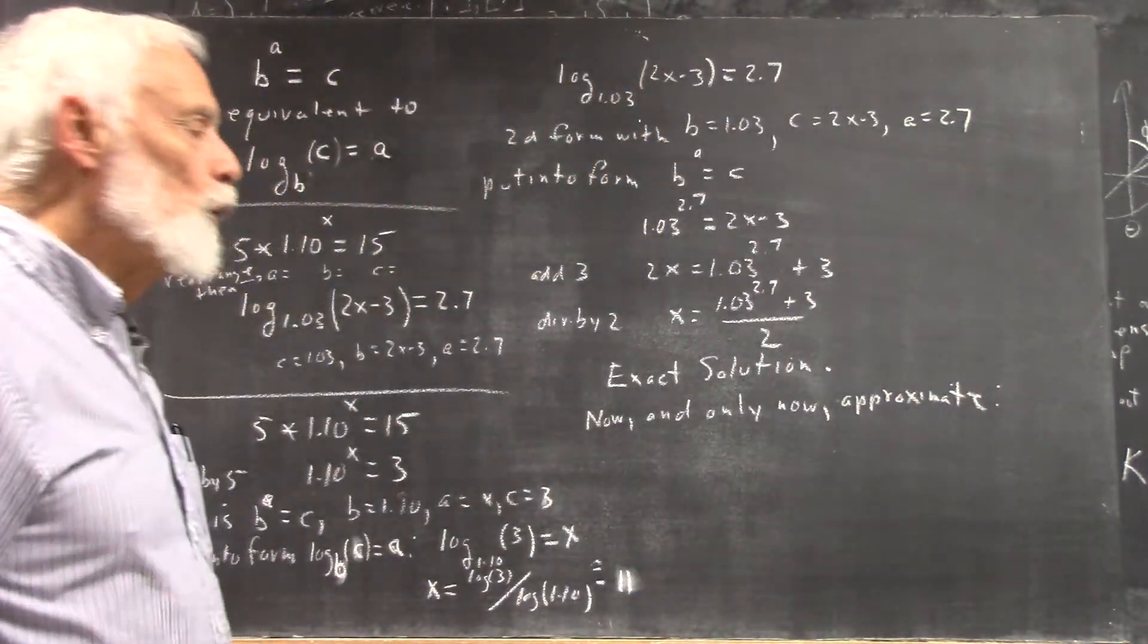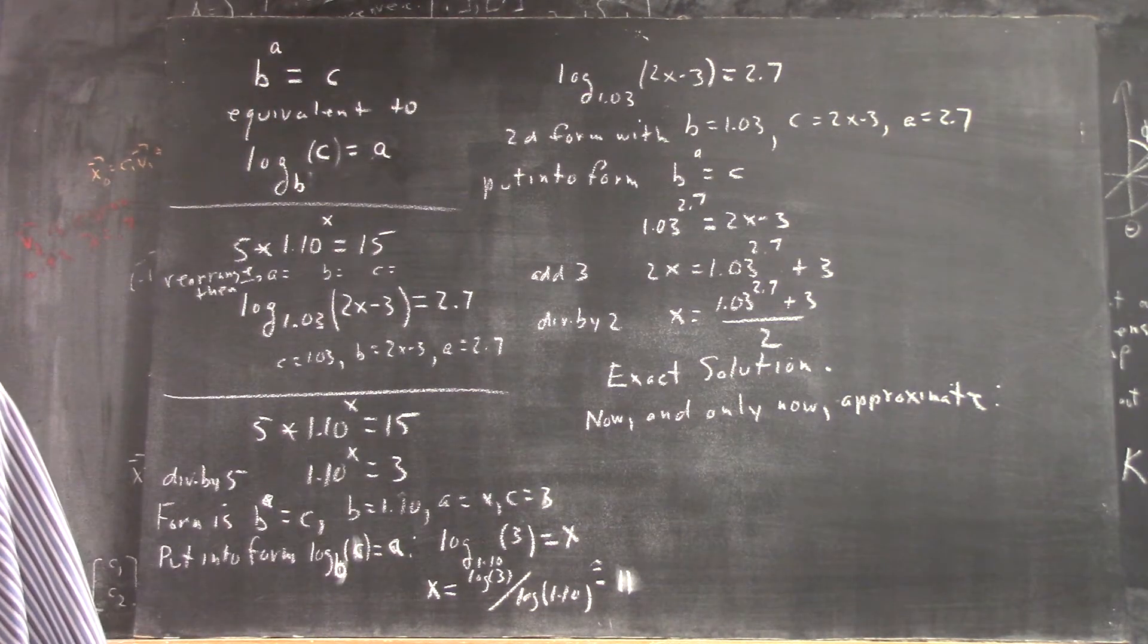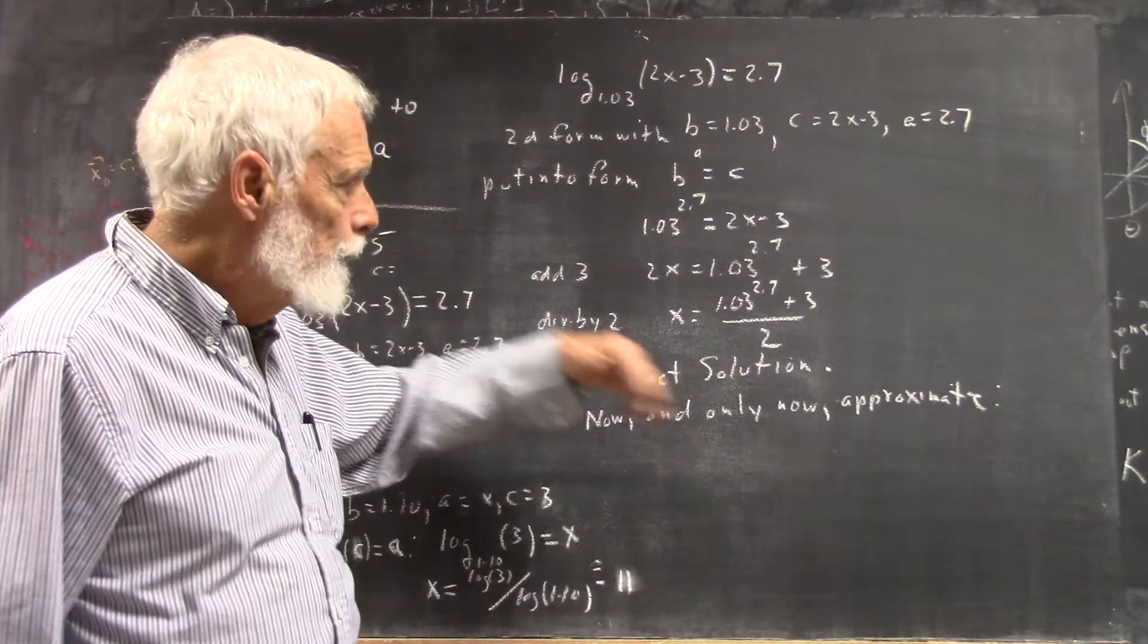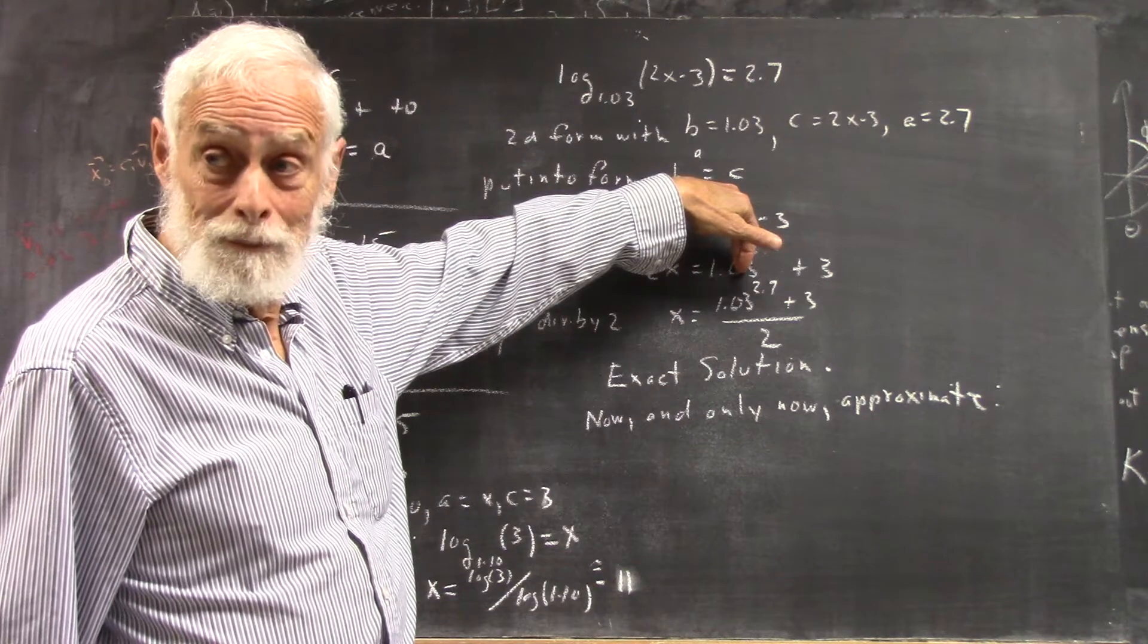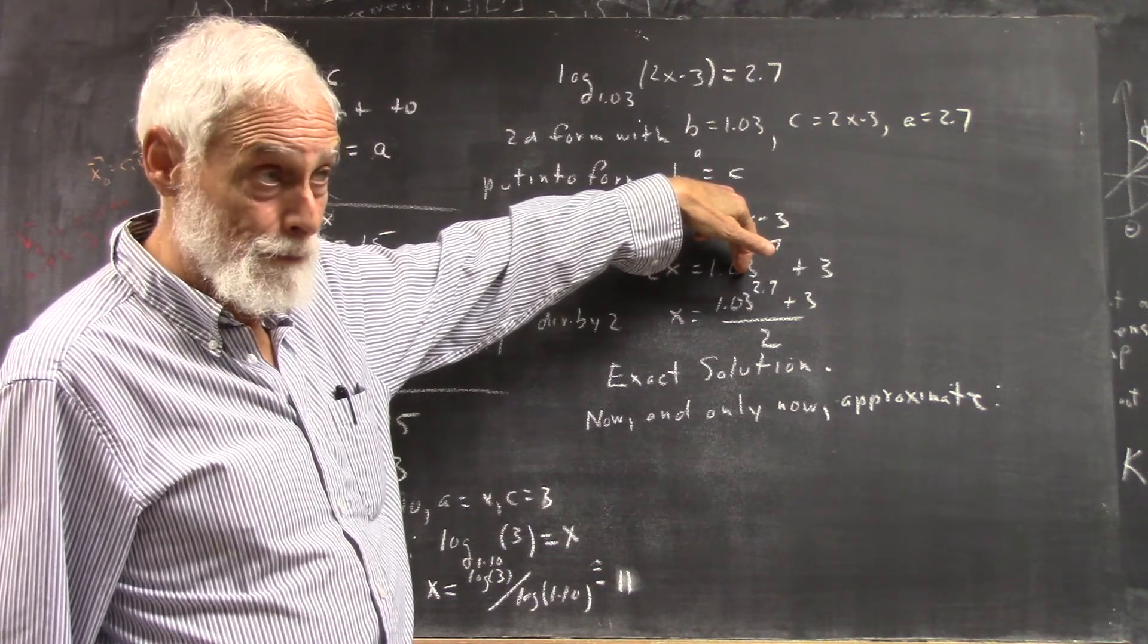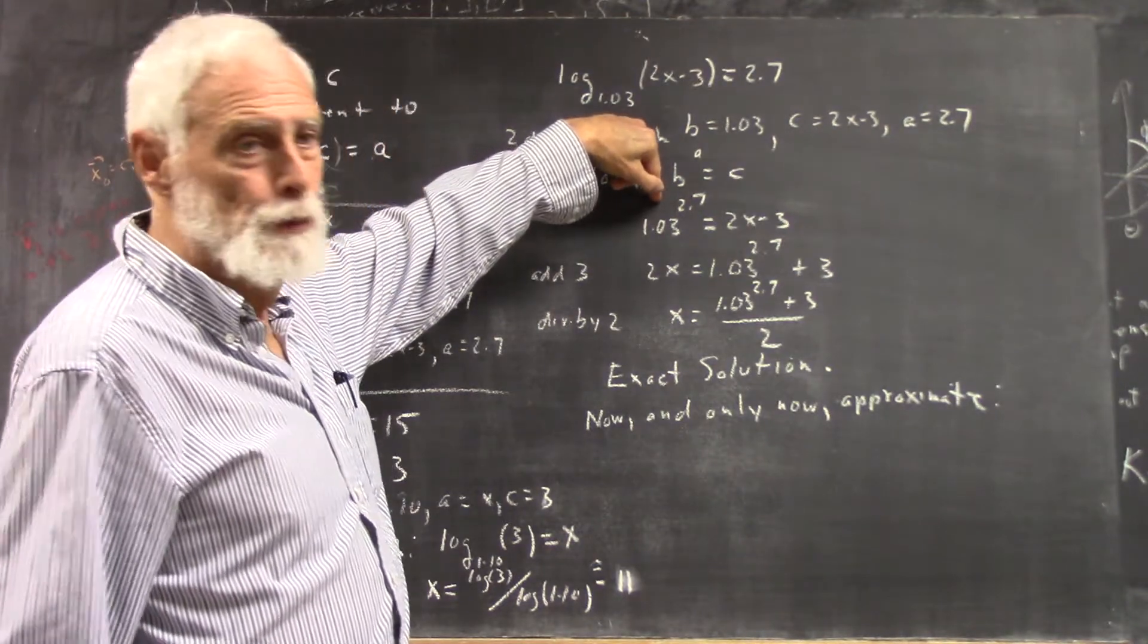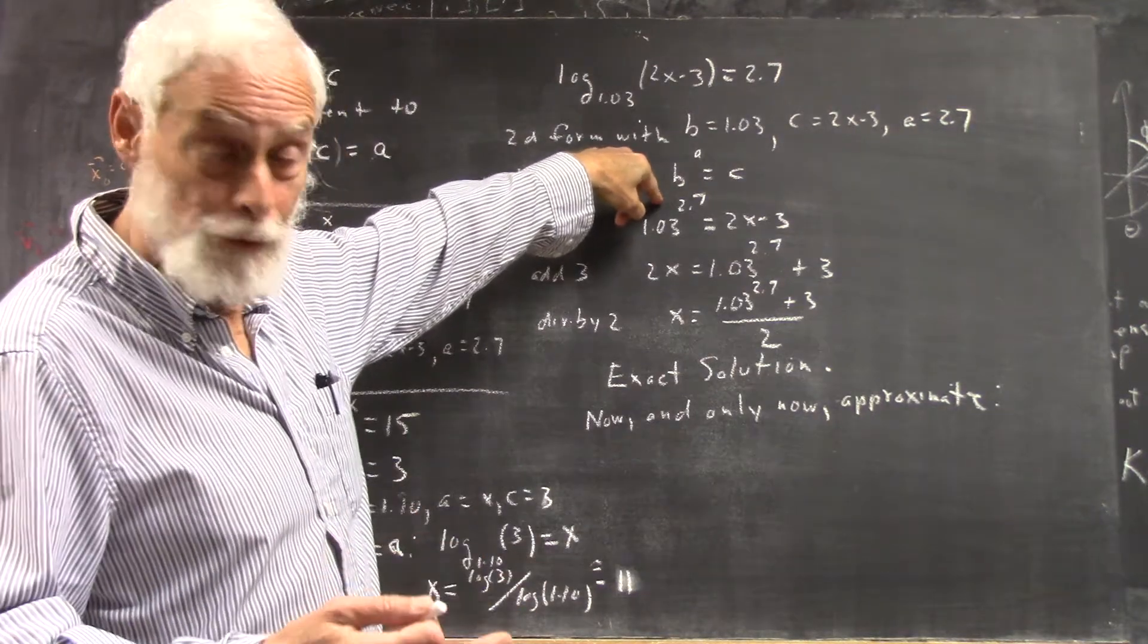Now and only now you approximate, because you do want to get a number. The reason you want to get your exact solution is because the number you get might be very sensitive to rounding off. So you don't want to mess with rounding off anything until you have your exact solution. And if you do your calculator at this point, in this case it wouldn't be too bad, but in other cases it might be, so we don't do that.